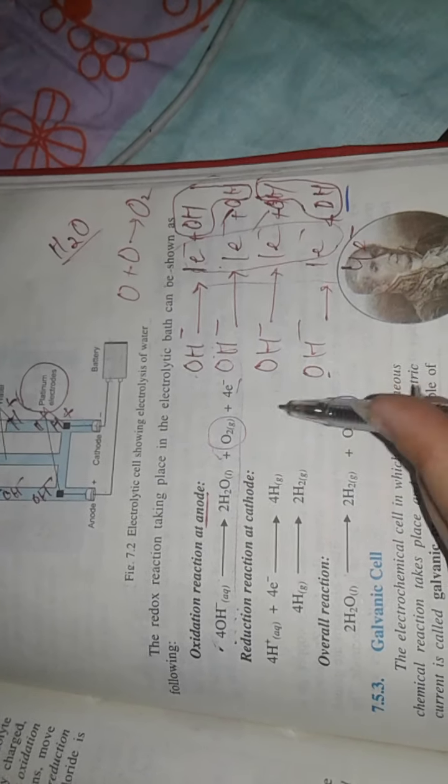Now moving towards the reaction at cathode. What is the reaction at cathode? H positive ions. What do we do? We need to gain electrons. 1 H positive ion gains 1 electron and forms H hydrogen.